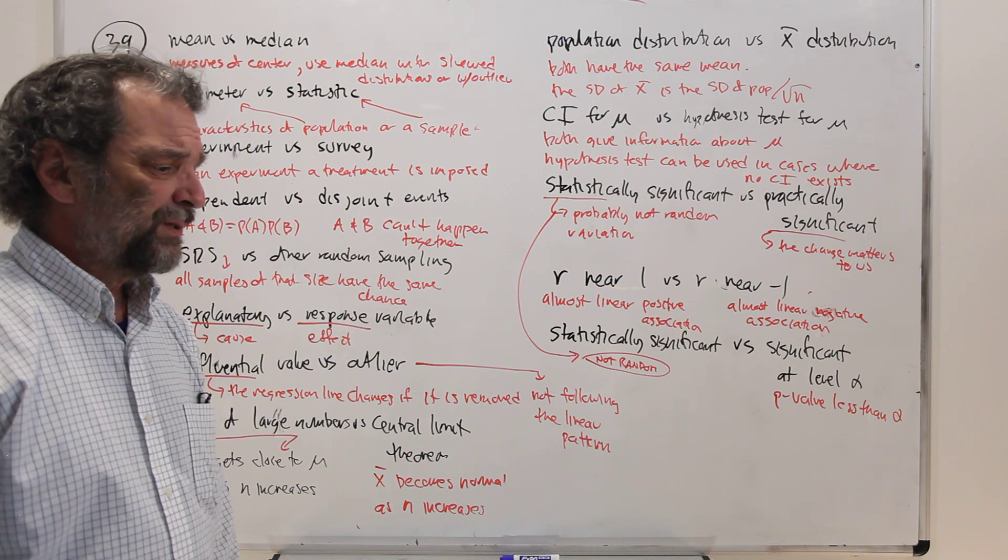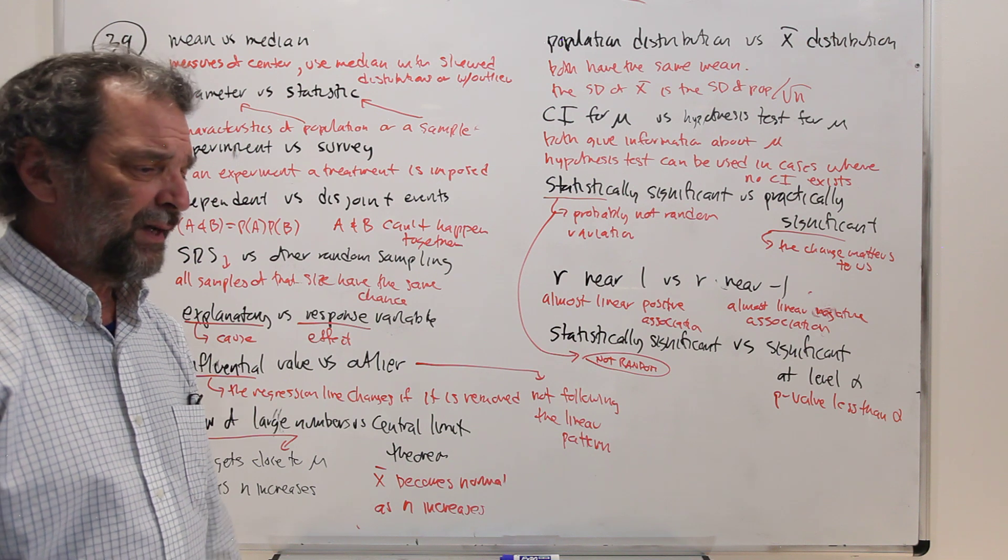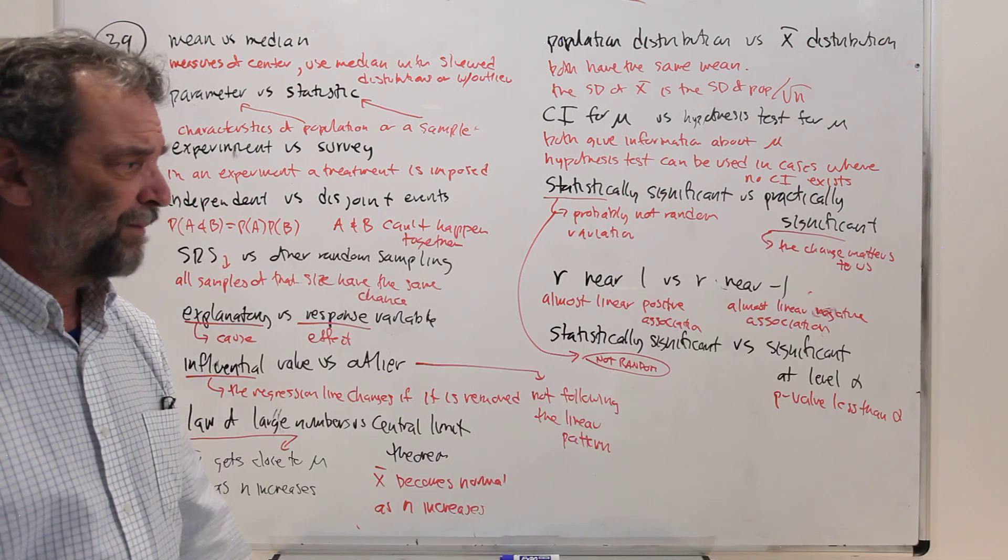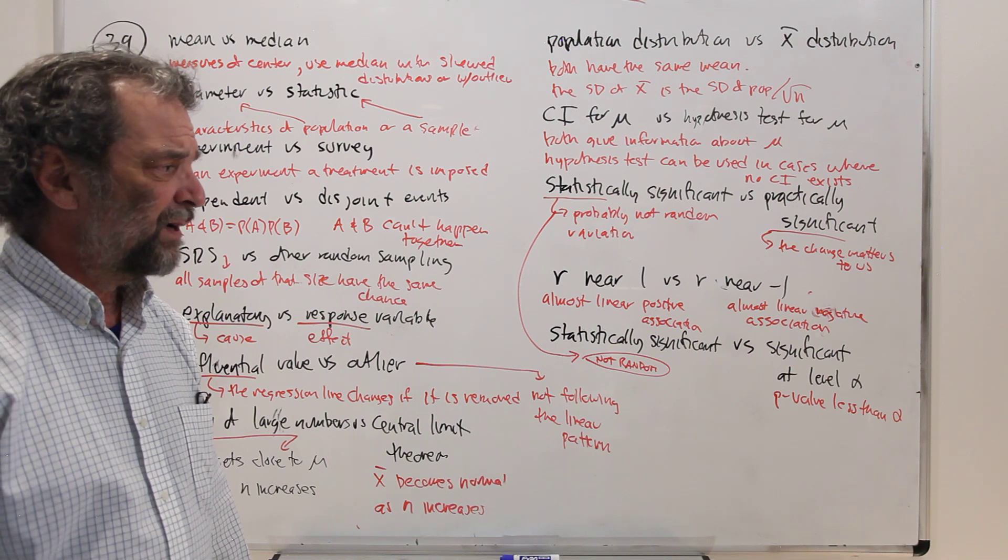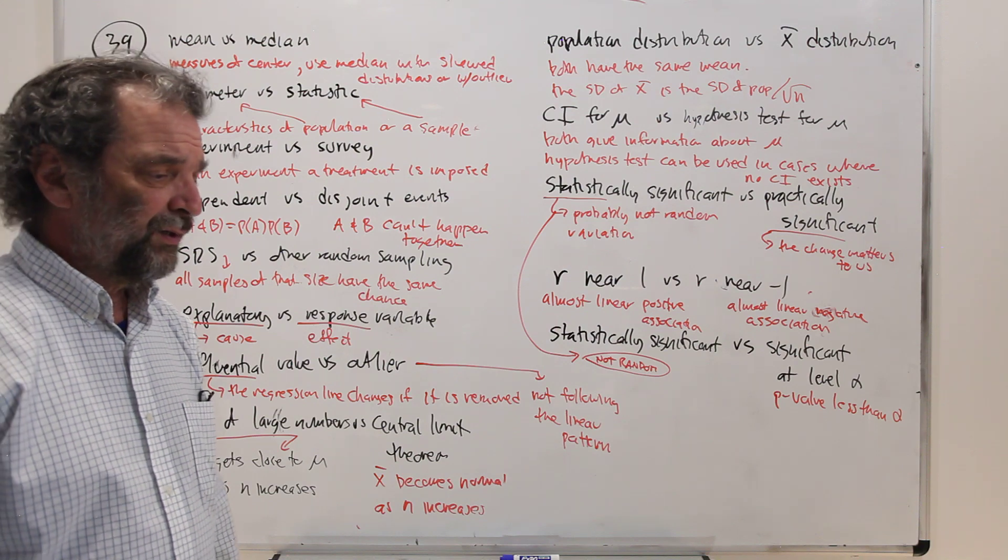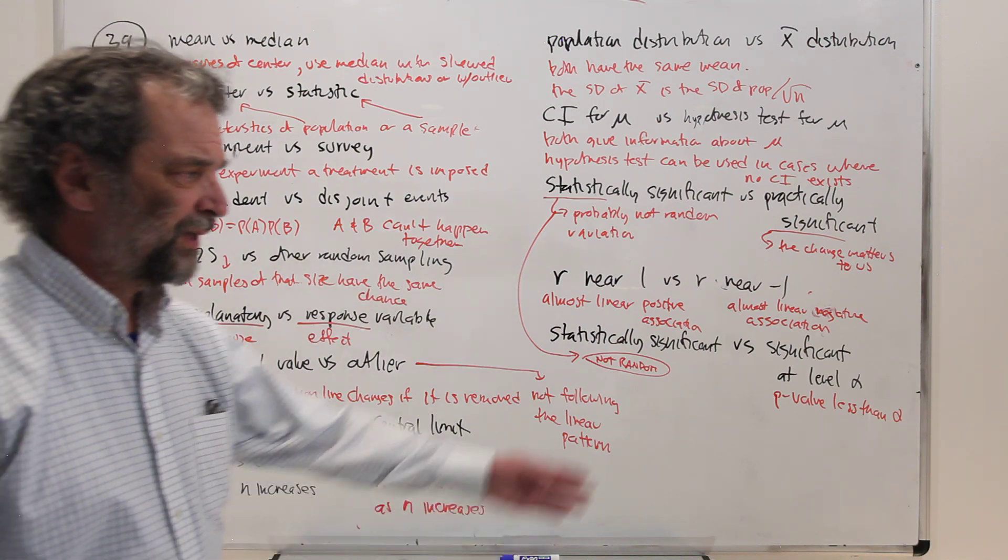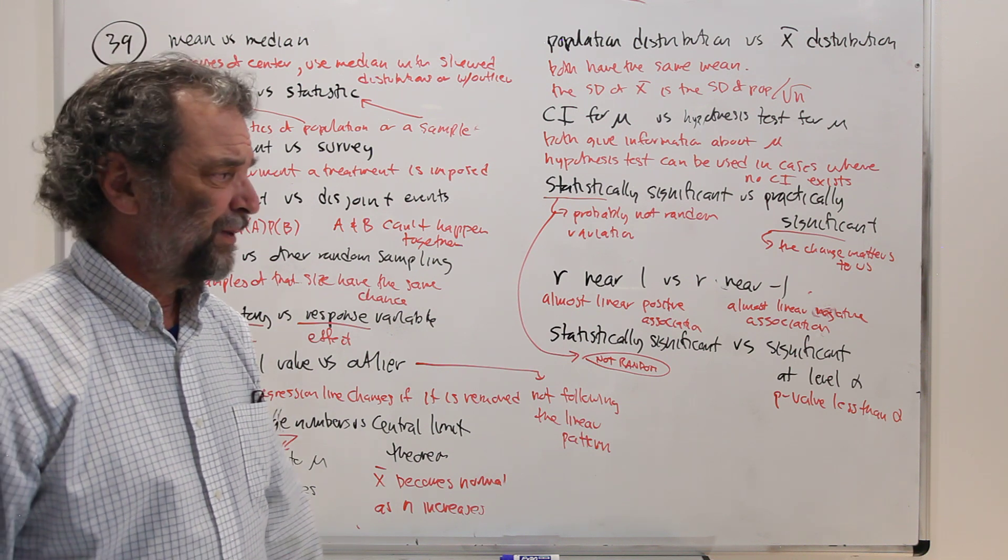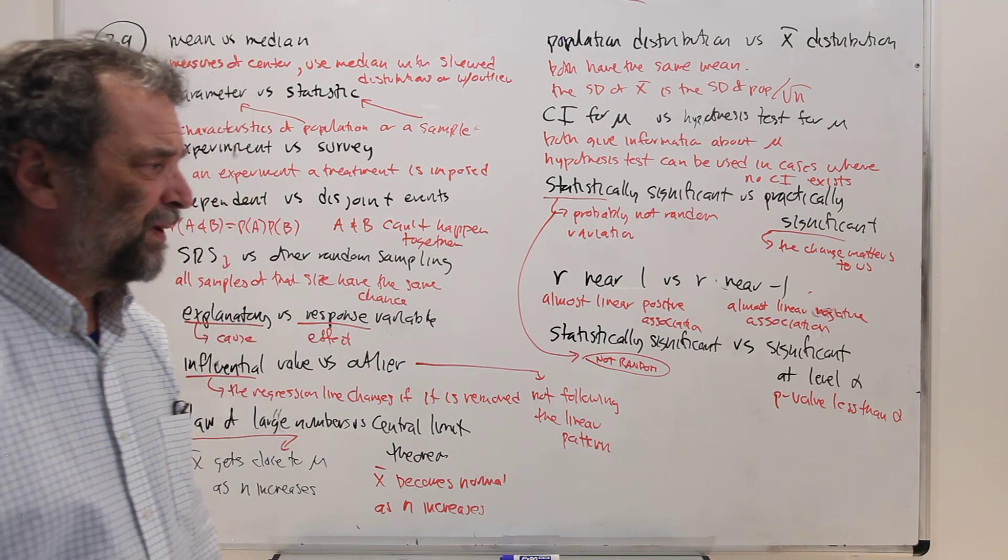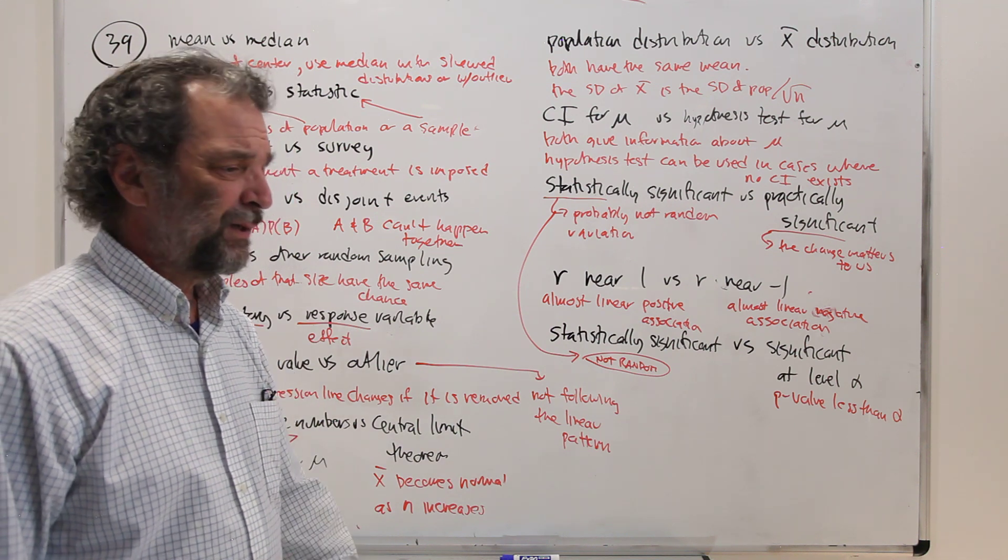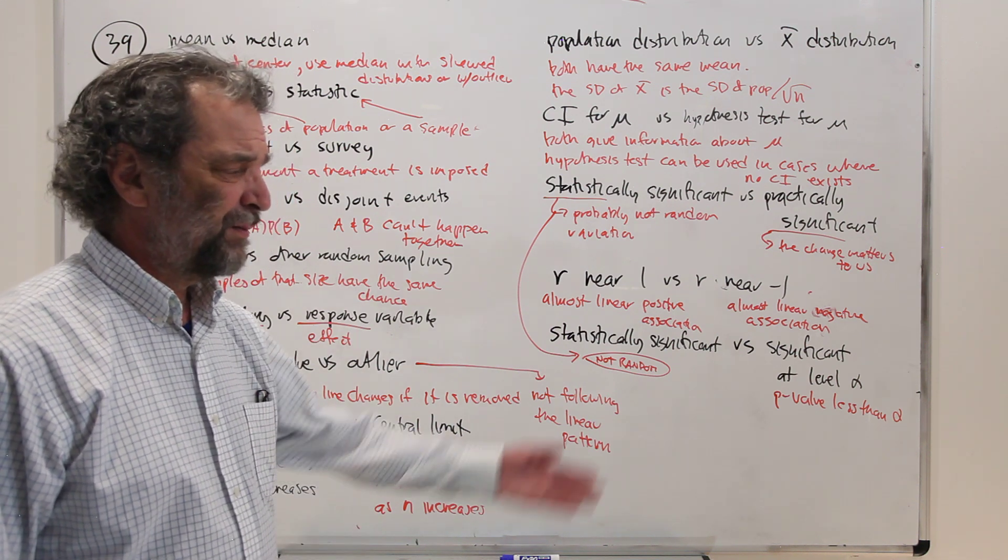So sometimes it just depends on the consequences of making the mistake of saying it looks like we should reject the null hypothesis or not. You have to pick the significance level carefully based on the damage that gets done. There's two things that could go wrong. You could not reject the null hypothesis because you set the level at such a small number that's hard to reach. That might be bad. Or you might reject the null hypothesis when you shouldn't, because the consequences of making that mistake could be big. So you might want...